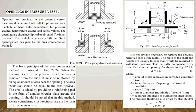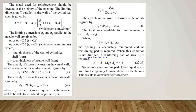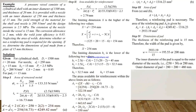Now we see one example to calculate the dimensions of the pad and the areas removed or added. A pressure vessel consists of a cylindrical shell with an inner diameter of 1500 mm and a thickness of 20 mm.